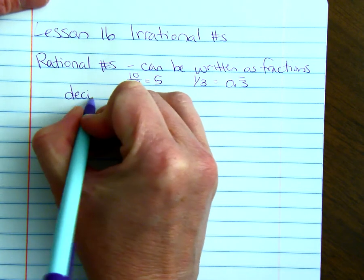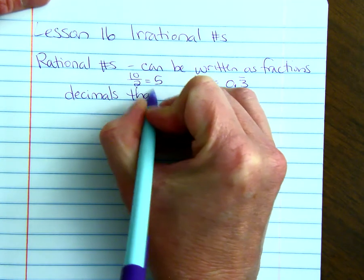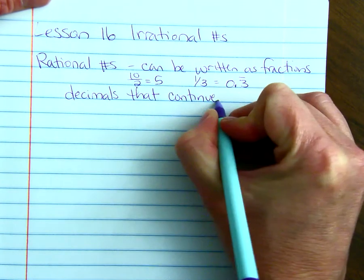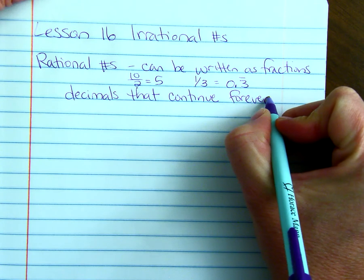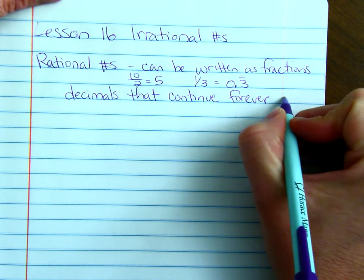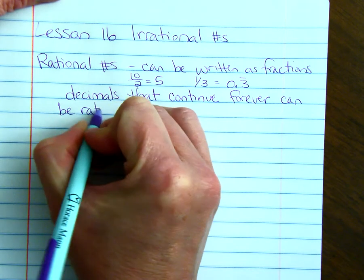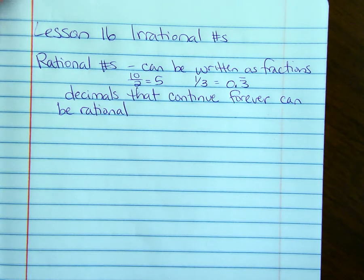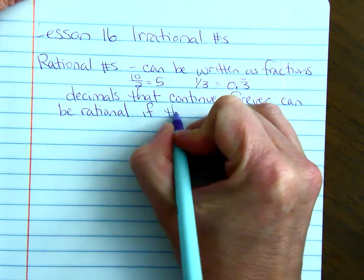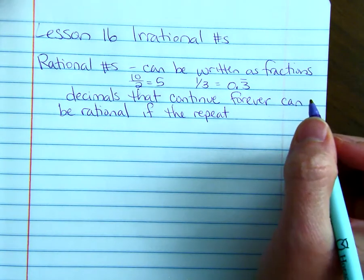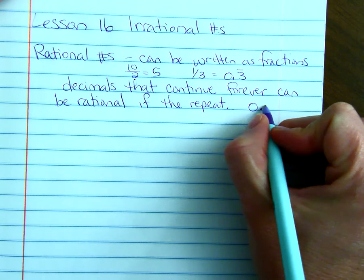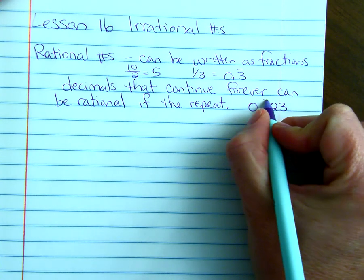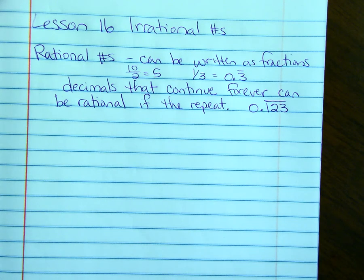So, decimals that continue forever can be rational if they repeat. If you can find a pattern that repeats in your decimal number, then it is rational. The decimal number 0.123 with the vinculum over all three numbers, which means it repeats. This is rational.